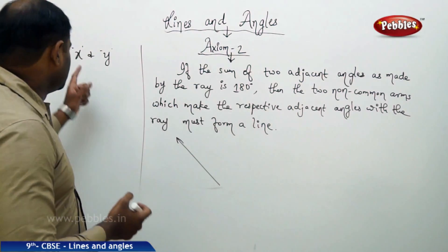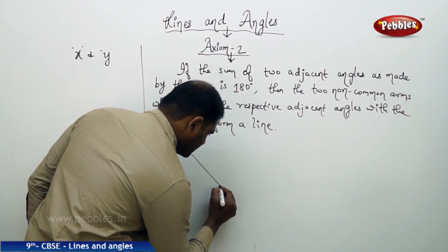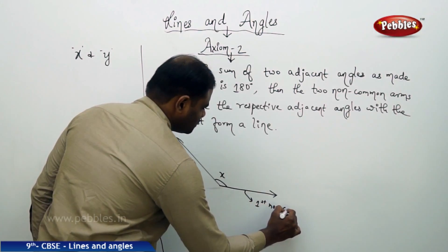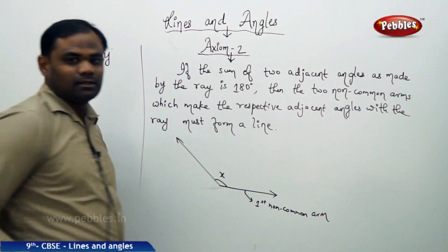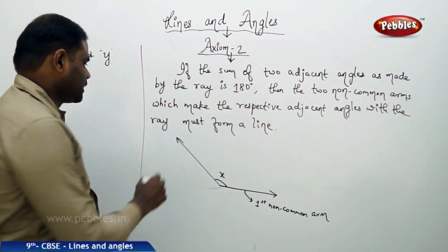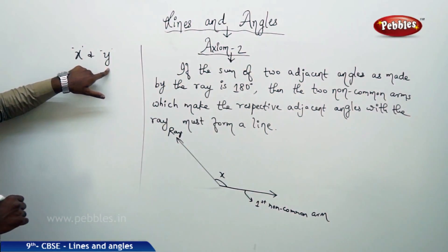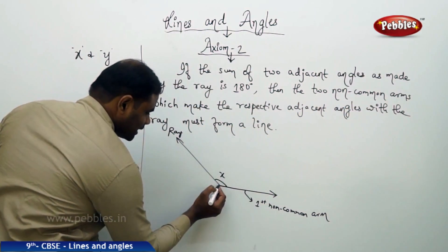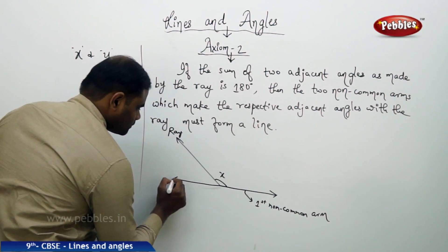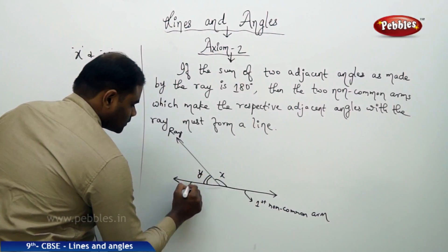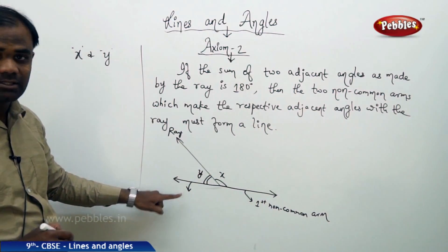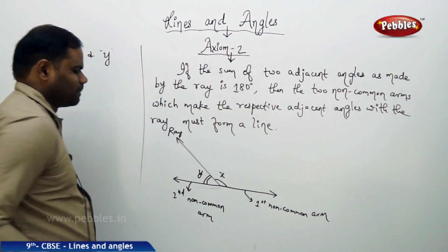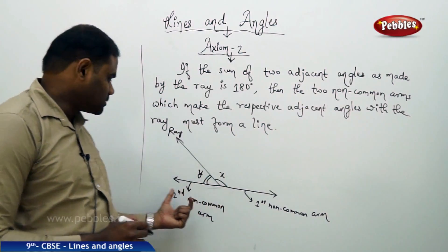They are beside each other. The angle x is made by the first non-common arm — this is the first non-common arm which makes an angle x with this ray. Now there is another angle y which is just adjacent to x and made by the other non-common arm. The ray makes an angle y with the second non-common arm.